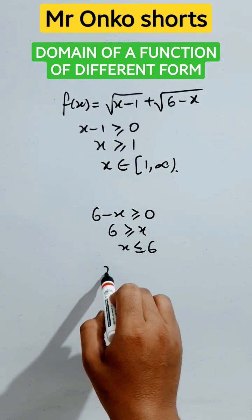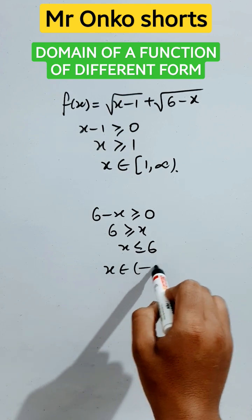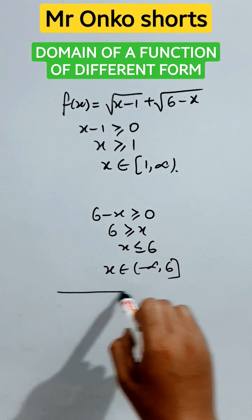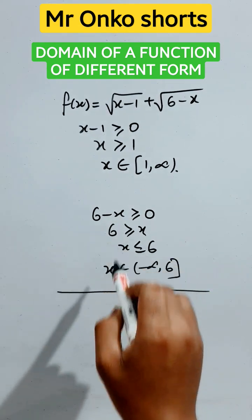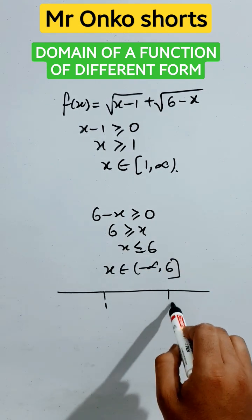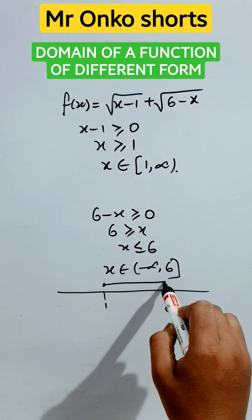So here x belongs to minus infinity up to closed six. So if we take the intersection of these two regions, that is positive one, that is positive six. It's closed one to closed six.